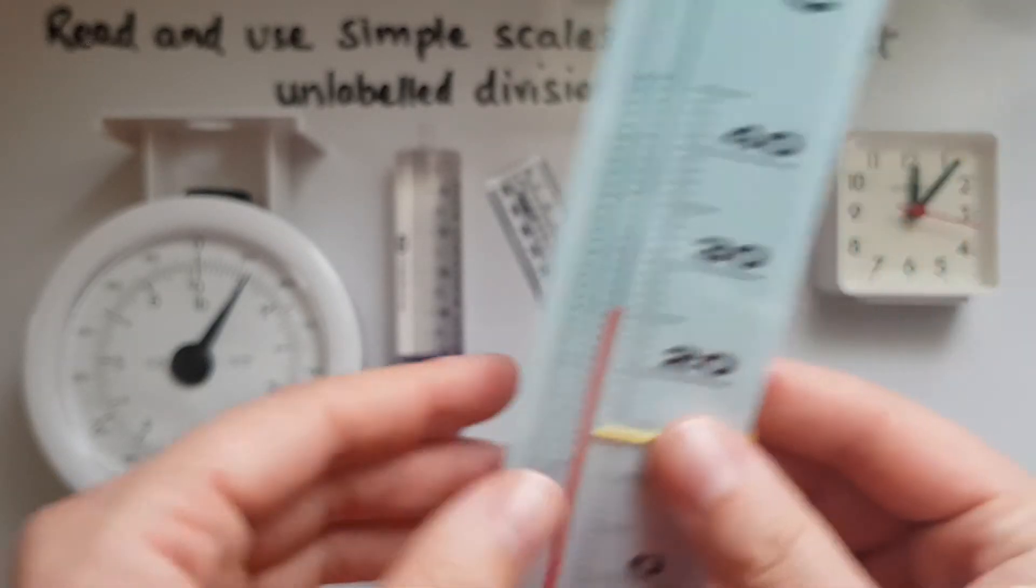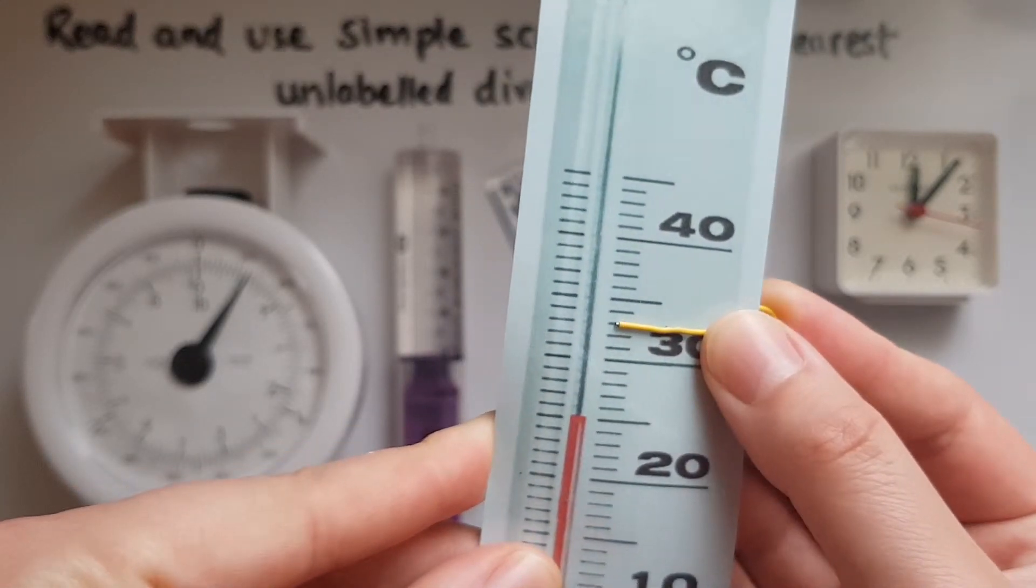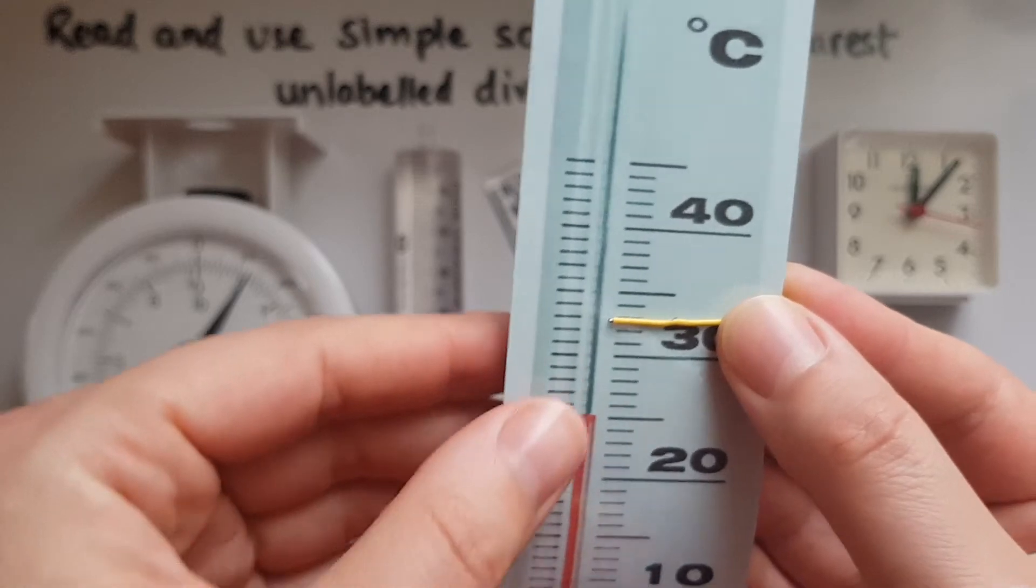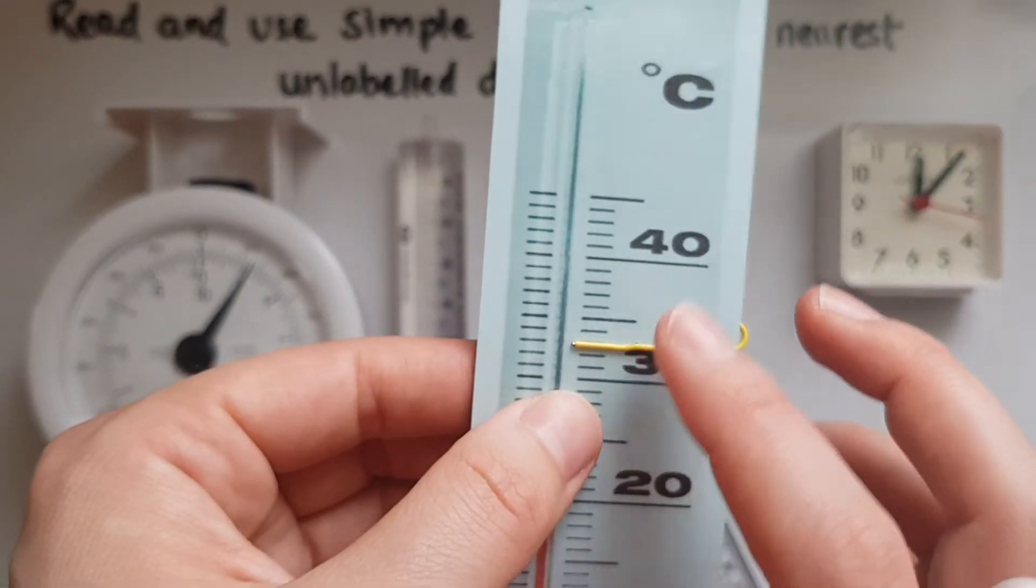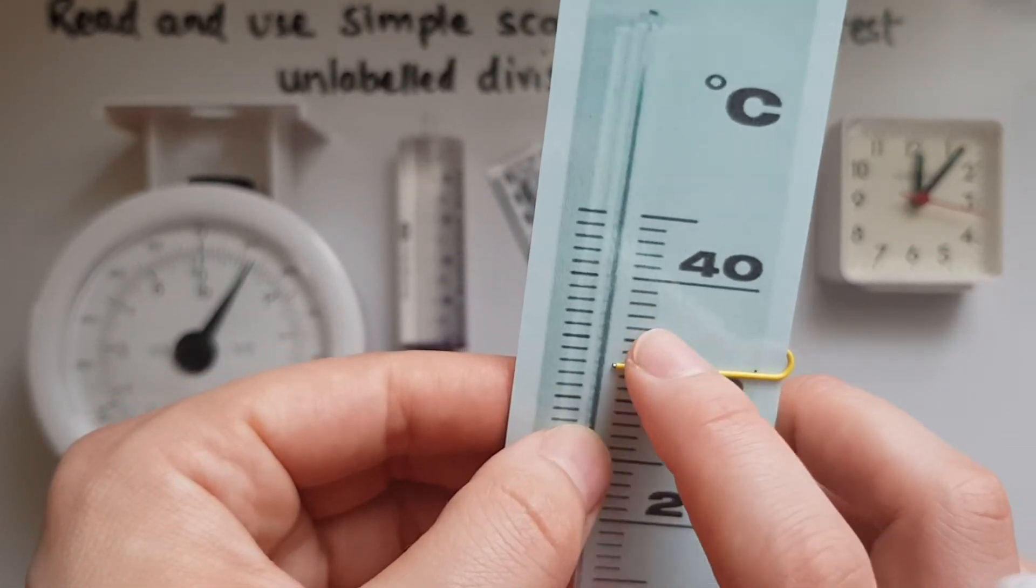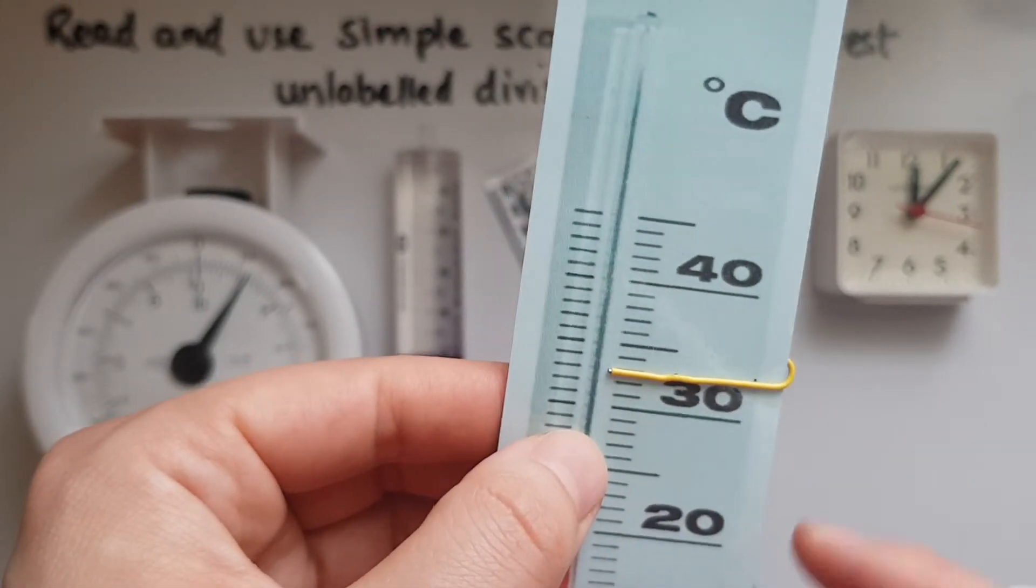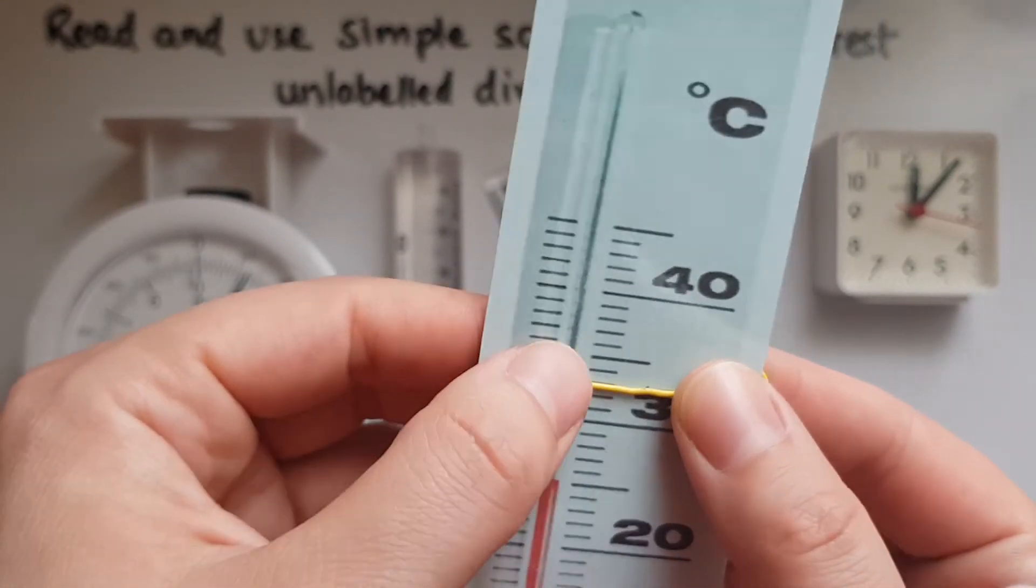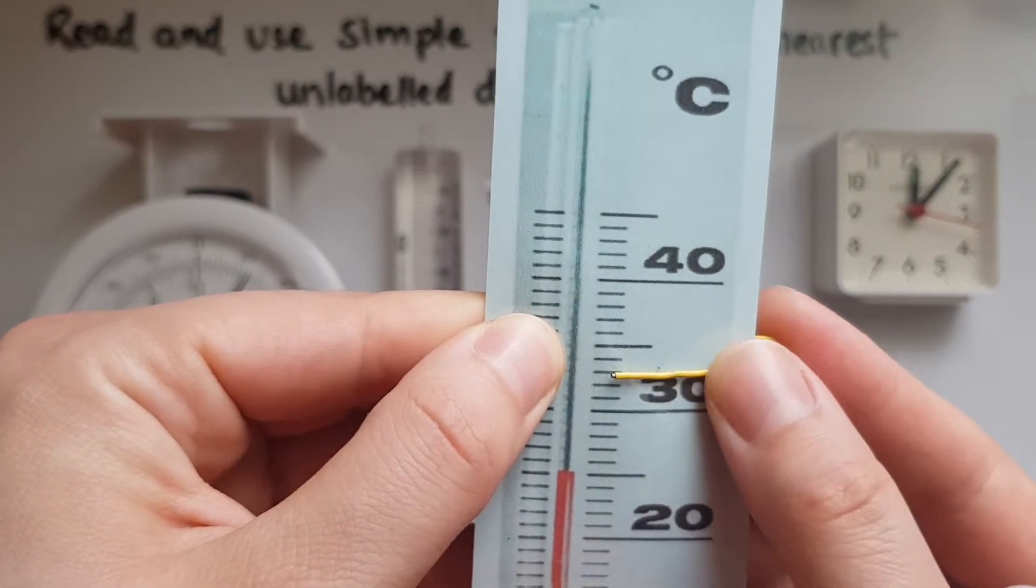In terms of a thermometer, let's have a look. What would be this temperature here? So we've got 30 and 40. We've got 31, 32, 33, 34, 35, 36, 37, 38, 39 and then 40. So this one here must be 33.